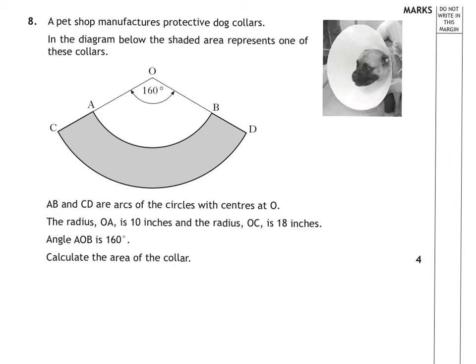Question 8, the famous dog collar question. So what we've got going on here is we have a big sector and we have a wee sector cut out. So our method is get the big sector, get the wee sector, and then take them away. Both sectors have an angle of 160. And it tells us that the radius of O to A, so the radius of the big one, O to C, is 18. The radius of the little one is 10.